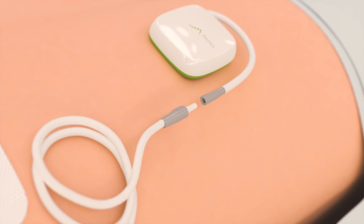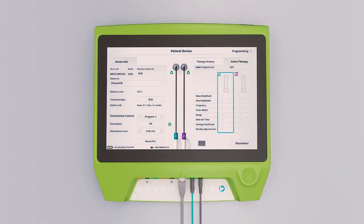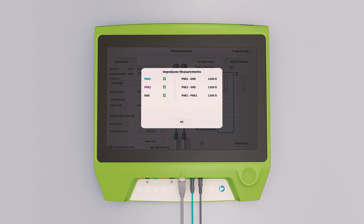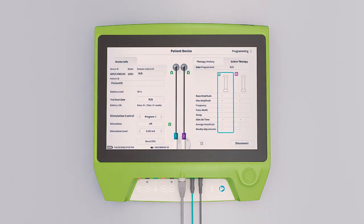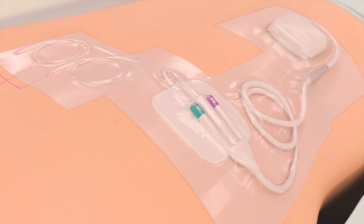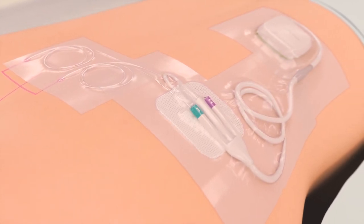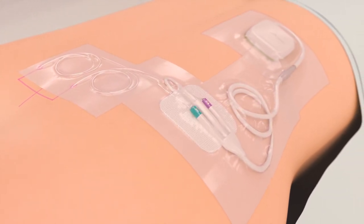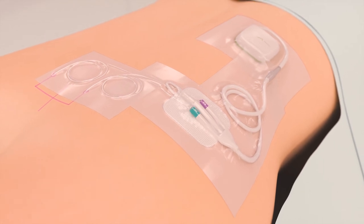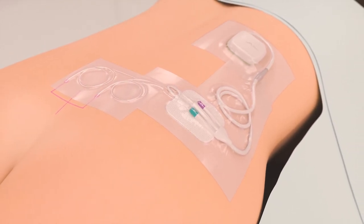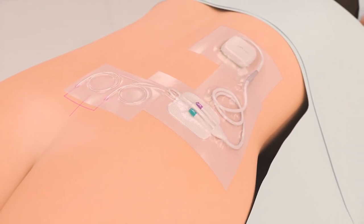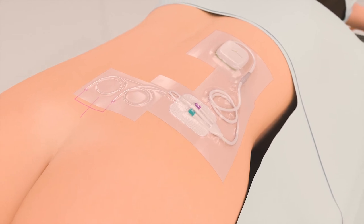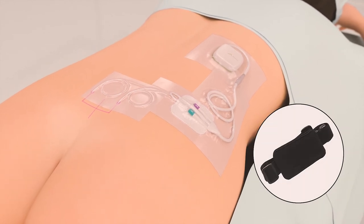The basic trial cable is connected to the trial stimulator. The clinician programmer is then used to wirelessly check lead impedances. Excess basic trial cable should be coiled and taped down, taking care to provide adequate strain relief near all connections. The trial stimulator can be taped securely and comfortably to the patient, or worn around the waist in the provided belt.